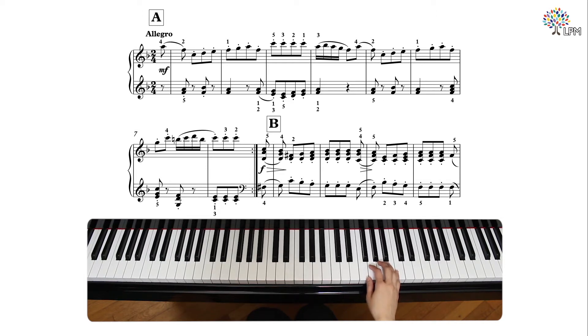For example, in measure 7, Haydn took a snippet of the main theme, the 16 note passage here, and reshaped it in measure 7.